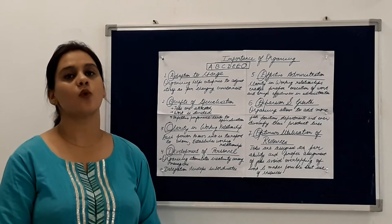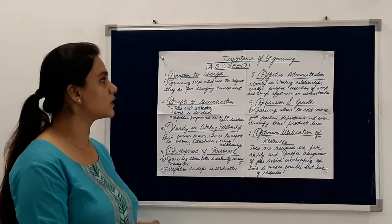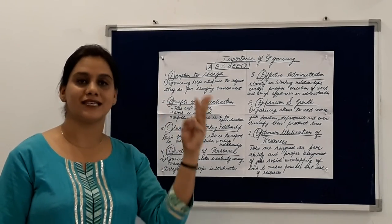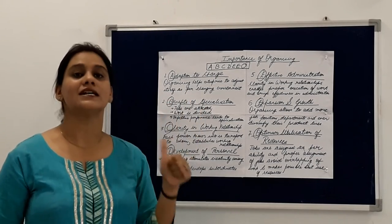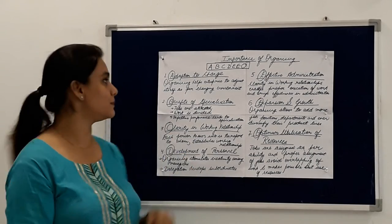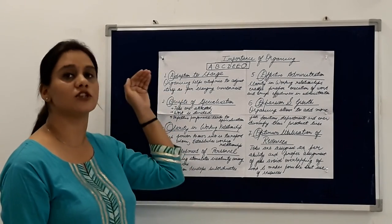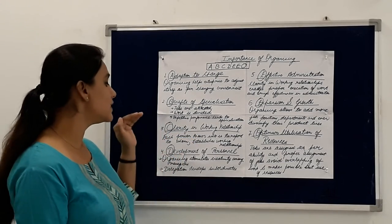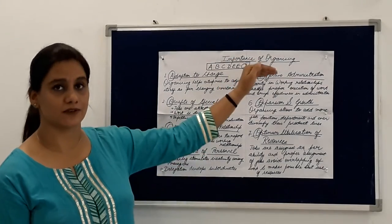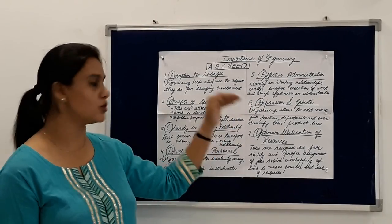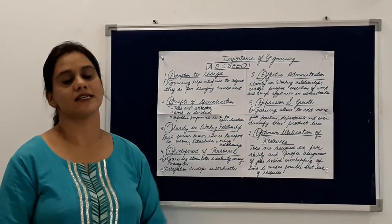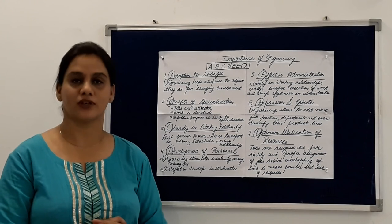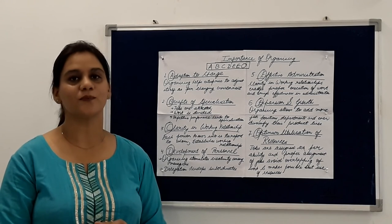So students, this was the explanation of the importance of organizing — very easy to learn: A, B, C, D, double E, O — that means adaption to change, benefits of specialization, clarity in working relationships, development of personnel, effective administration, expansion and growth, and optimum utilization of resources. I hope you liked the video. Thank you students.